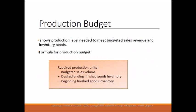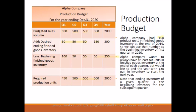Now that we know Alpha Company intends to sell 500 units per quarter and 2,000 units for the year, we need to create a production budget to determine how many units should be produced each quarter to meet sales and inventory needs. This is obtained using the formula: budgeted sales volume plus desired ending inventory of finished goods, minus beginning finished goods inventory, equals required production units.